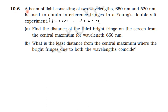A beam of light consisting of two wavelengths, 650 nanometer and 520 nanometer, is used to obtain interference fringes in Young's double slit experiment. The distance of the slits from the screen is 1.2 meter, and the distance between the slits is 2 millimeter. First, find the distance of the third bright fringe on the screen from the central maximum for wavelength 650 nanometer.